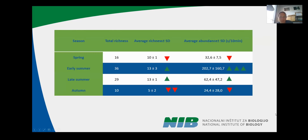If we put these seasons more into numbers and look at richness and abundance, we see that in spring we have low richness and low abundance. Then in early summer, richness rises and average abundance is enormously high. In late summer, we still have high richness and high abundance, but much lower than early summer. Then in autumn, average richness and abundance drop significantly.